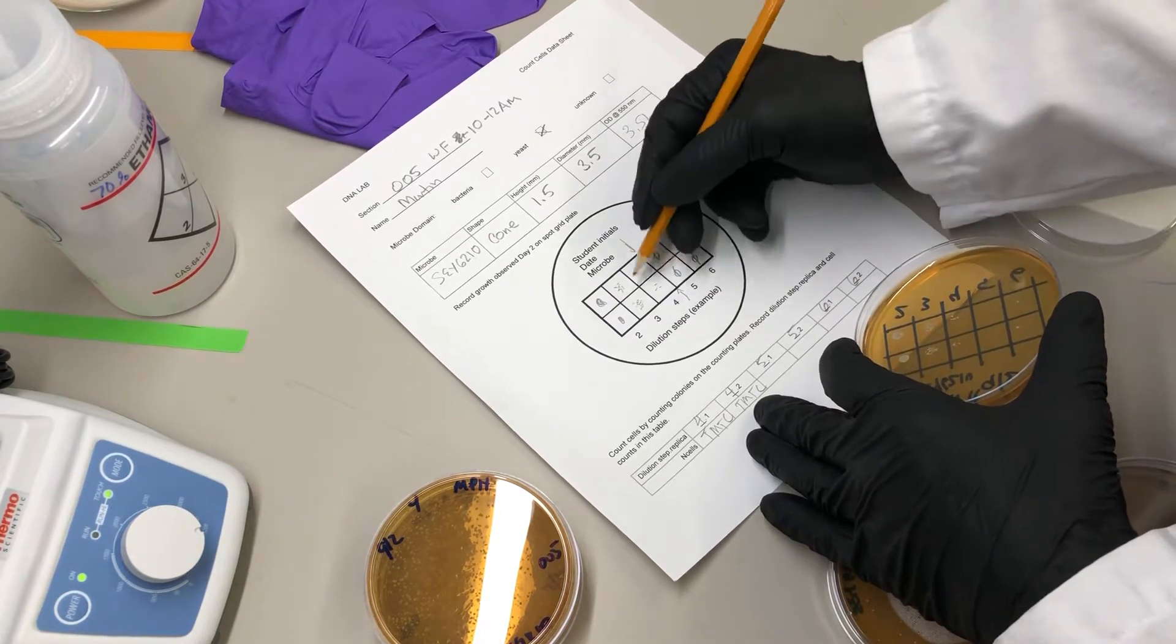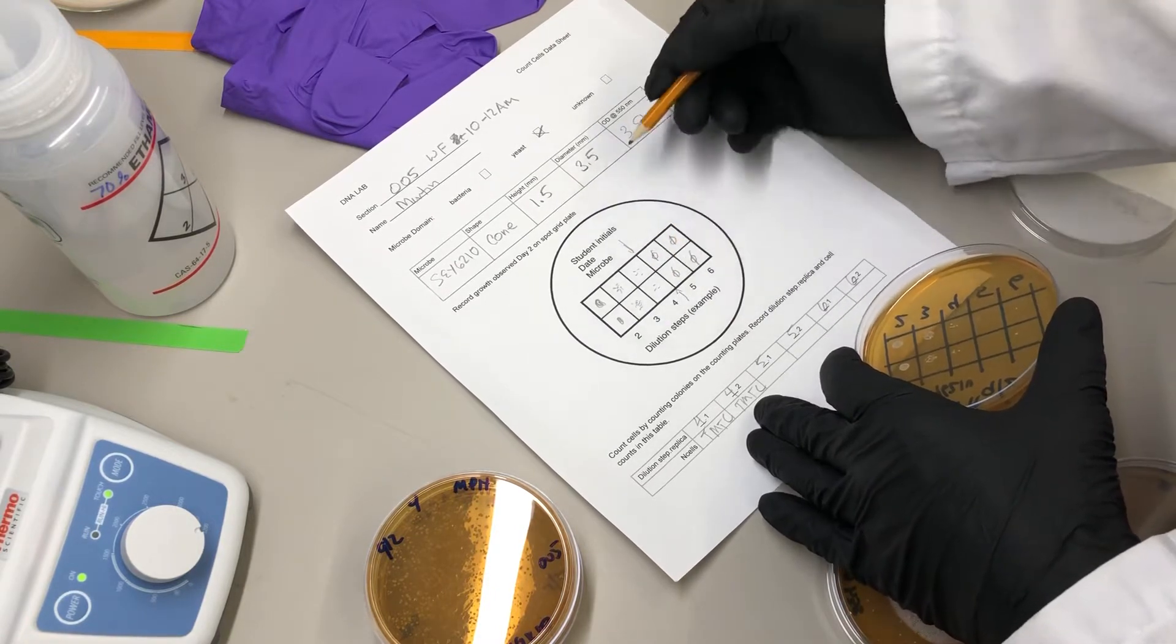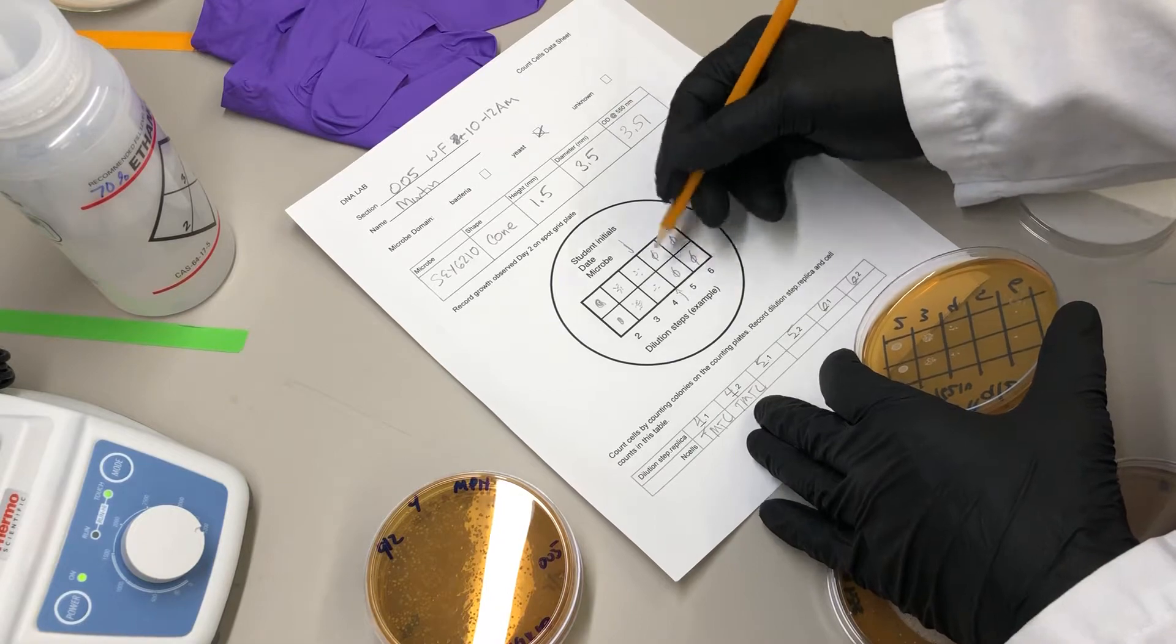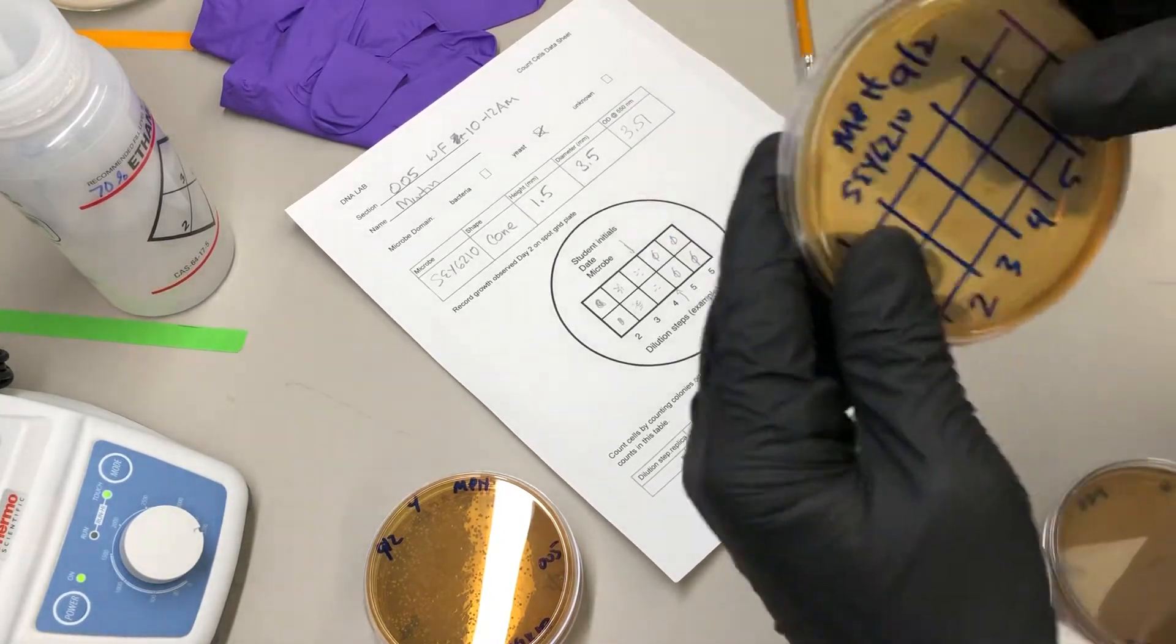Because then when you multiply this by 100 or 50, when you scale up the sample size, you'll get countable numbers. So that's the spot grid plate.